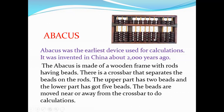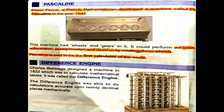The upper part has two bits and the lower part has five bits. The bits are moved near or away from the crossbar to do calculation. Blaise Pascal, a French mathematician, developed a machine called the Pascaline in the year 1642. This machine had wheels and gears in it. It could perform addition, subtraction, multiplication and division by rotating these wheels.